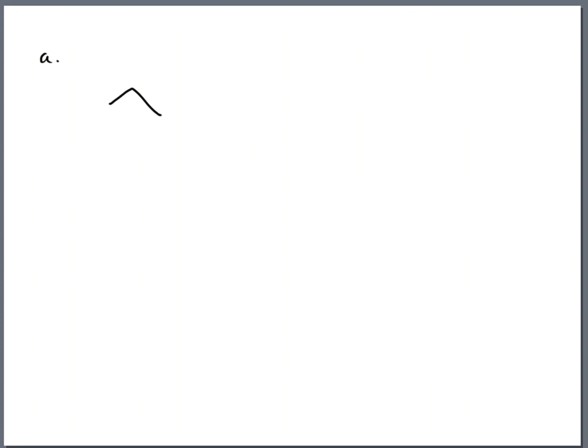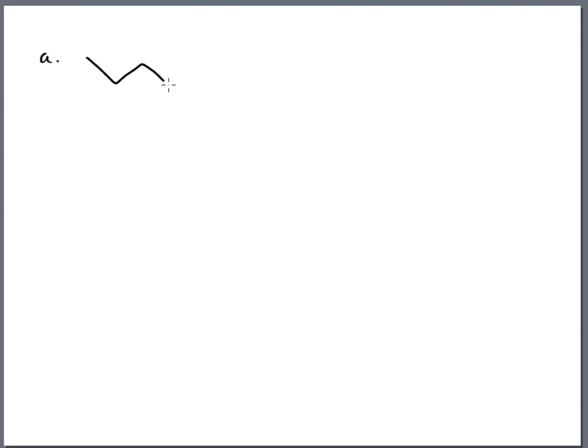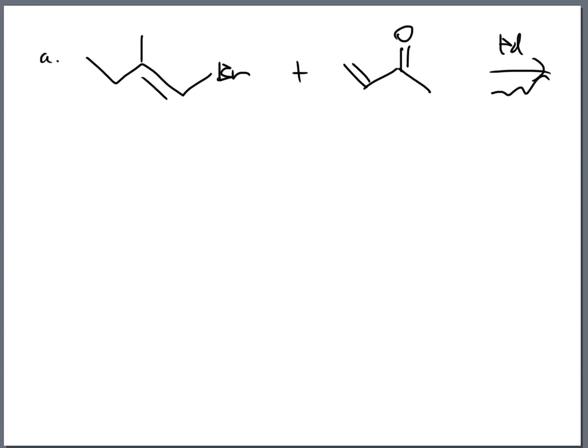Let me make it match exactly what you saw on your screen. So we had that halide, this alkene with palladium and so on. They want to know: if a HEC reaction goes forward, what's your product? What do you get?